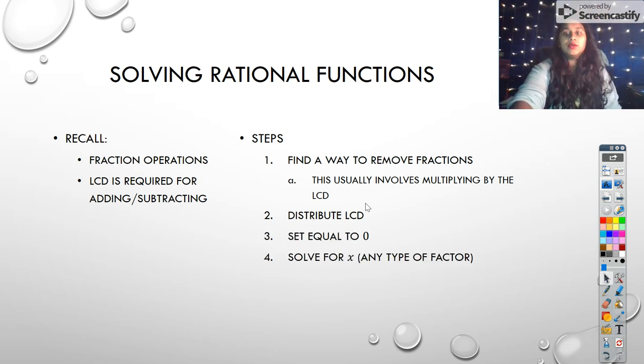So that's the next step. Set it equal to zero. So then you solve for X using any kind of factor, whether it's pulling out a greatest common factor, synthetic division, multiply a times C by grouping, whatever you're going to use, you're going to factor it out, solving for your X. And then that's how we would solve any rational equation.